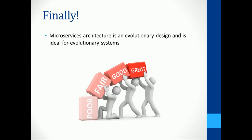Finally, microservices architecture is an evolutionary design, ideal for evolutionary systems. If you go back 10 years, technologies were different — more focused on computer systems. Nowadays systems are more focused on mobile devices, and in future some other kind of devices may come that current systems may not support. Microservices is the best solution for that because it's a flexible, smaller component design that can best suit evolutionary systems and support whatever new systems come in the future.